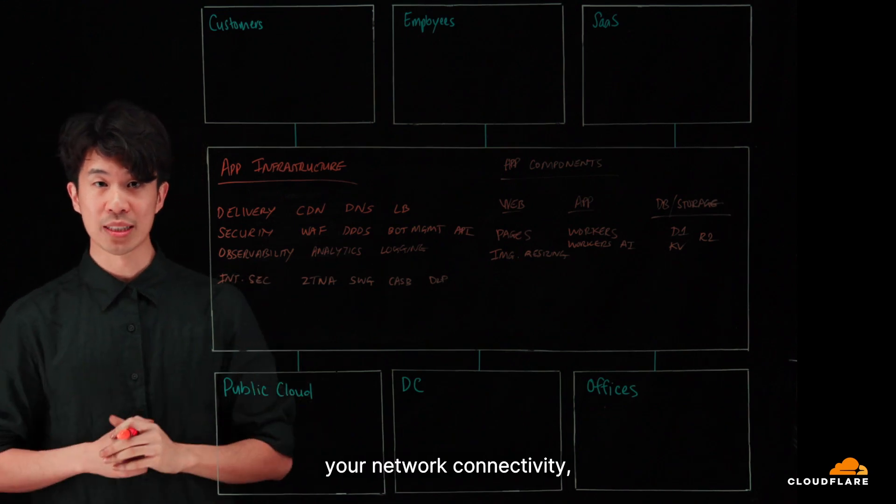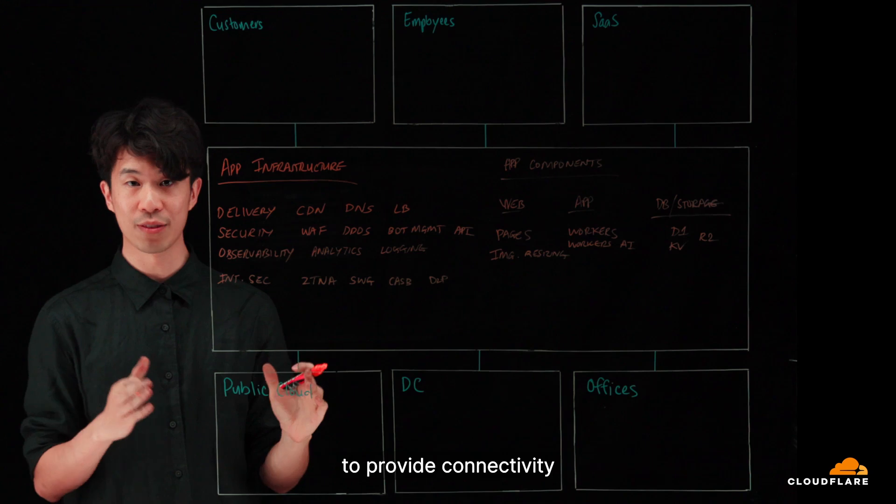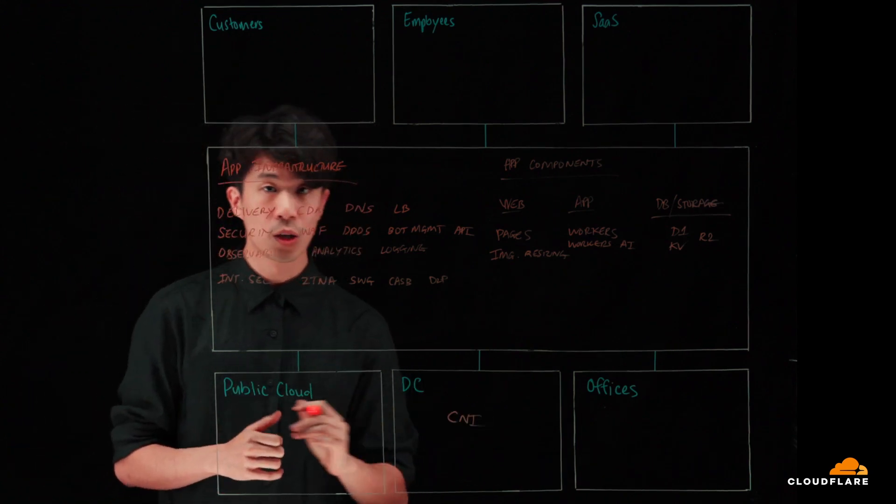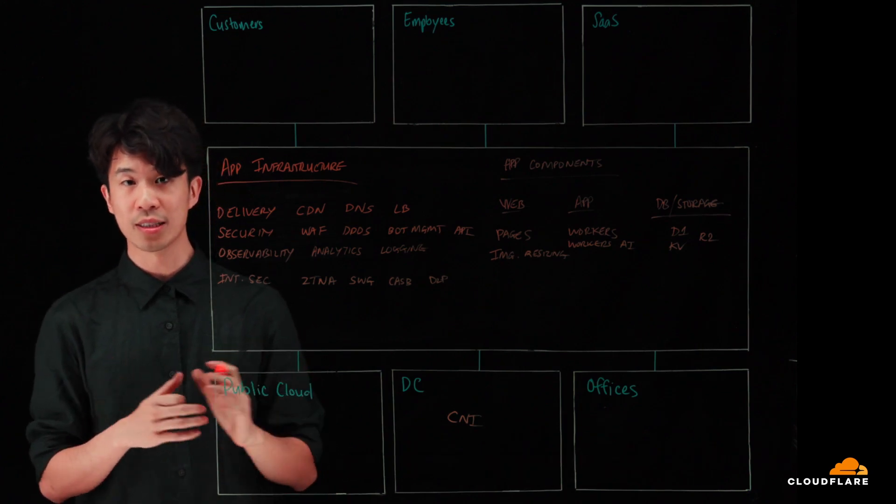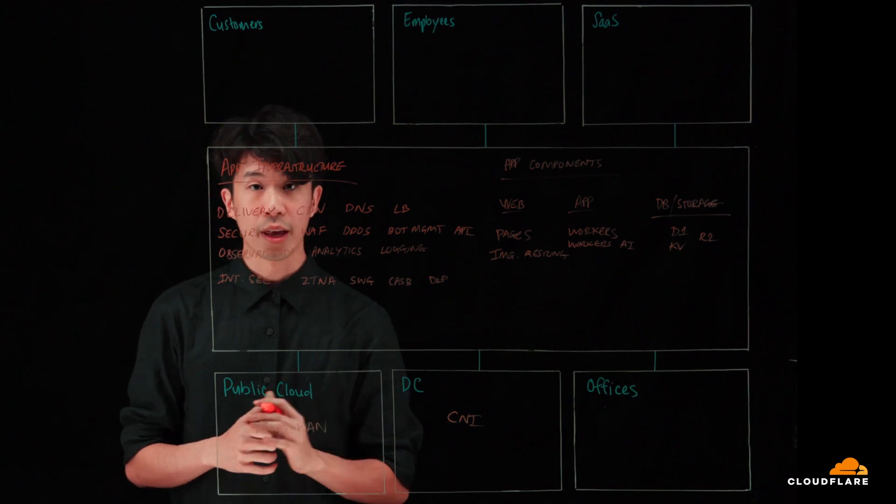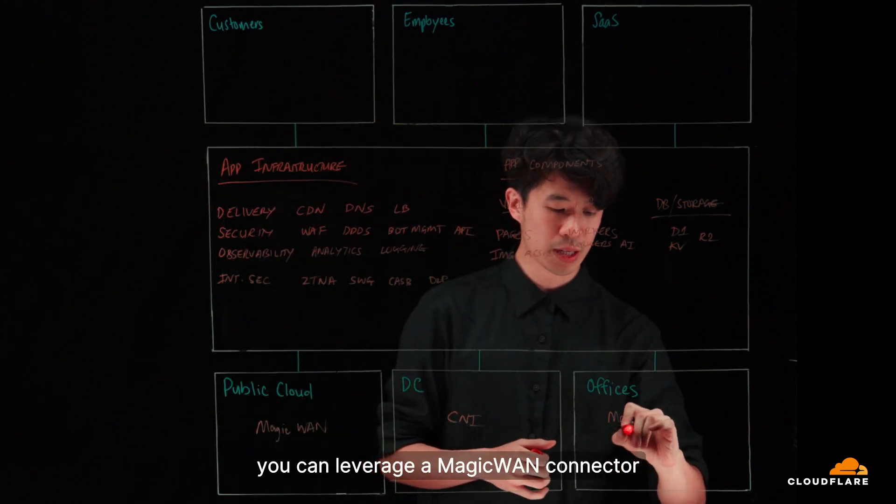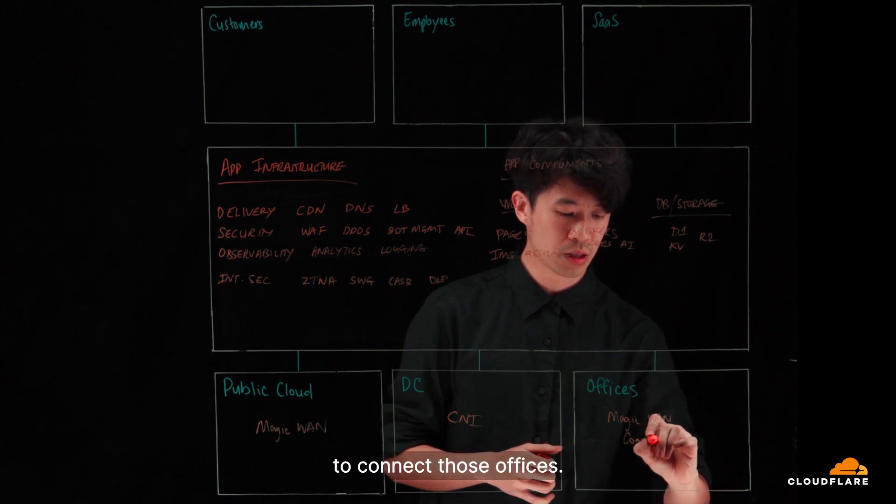If you're re-imagining your network connectivity, we have a Cloudflare network interconnect to provide connectivity at all supported locations. We also have an IPsec tunnel approach, leveraging our Anycast network called Magic-WAN, and for physical appliances, you can leverage a Magic-WAN connector to connect those offices.